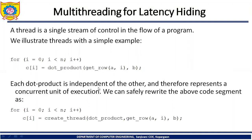Each dot product is independent of the others and therefore represents concurrent units of execution. So we can simply rewrite the above code fragment as: for i = 0, i < n, i++, C[i] = create_thread(dot_product, get_row(A, i), b). If we create a thread for this equation, then concurrently threads will be created for each multiplication of the row with the vector element. This is multithreading.